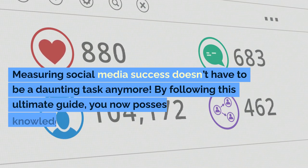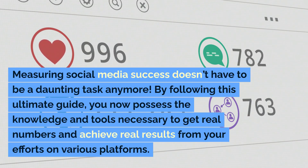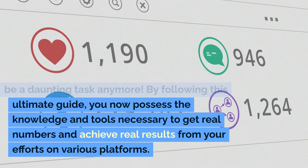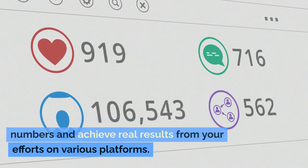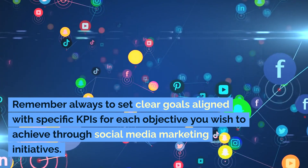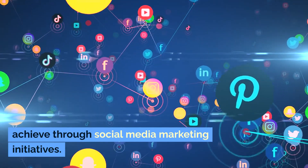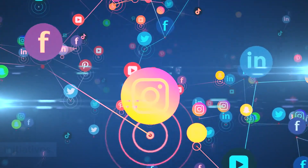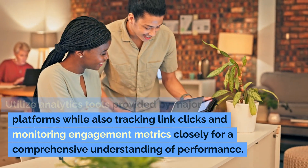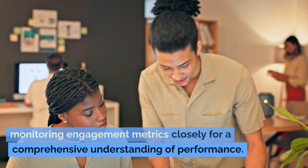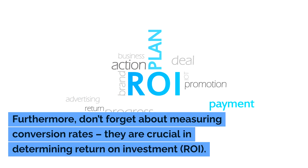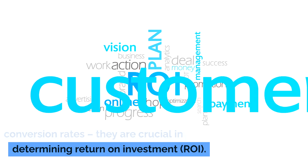Conclusion: Measuring social media success doesn't have to be a daunting task anymore. By following this ultimate guide, you now possess the knowledge and tools necessary to get real numbers and achieve real results from your efforts on various platforms. Remember always to set clear goals aligned with specific KPIs for each objective you wish to achieve through social media marketing initiatives. Utilize analytics tools provided by major platforms while also tracking link clicks and monitoring engagement metrics closely. Furthermore, don't forget about measuring conversion rates — they are crucial in determining return on investment, ROI.